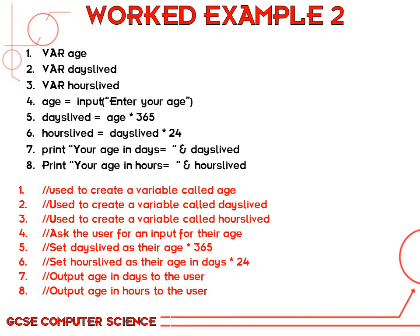Now we've got three different things — age, days left, and hours left — all stored in memory. So all we've got to do is print them to the screen. We're going to output a string of text: 'Your age in days equals' and then the value from the calculation. And then we're going to output 'Your age in hours' and the value of hours left. Hopefully that example is now a bit more clear and straightforward.